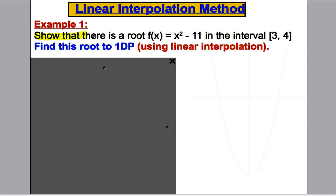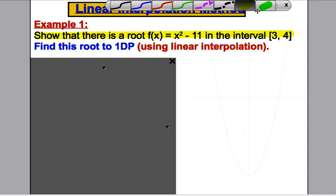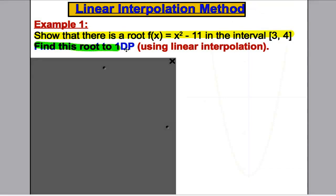So show there is a root to f(x) = x² - 11 in the interval [3, 4], and then we're going to find this root to one decimal place using a different method, namely linear interpolation.